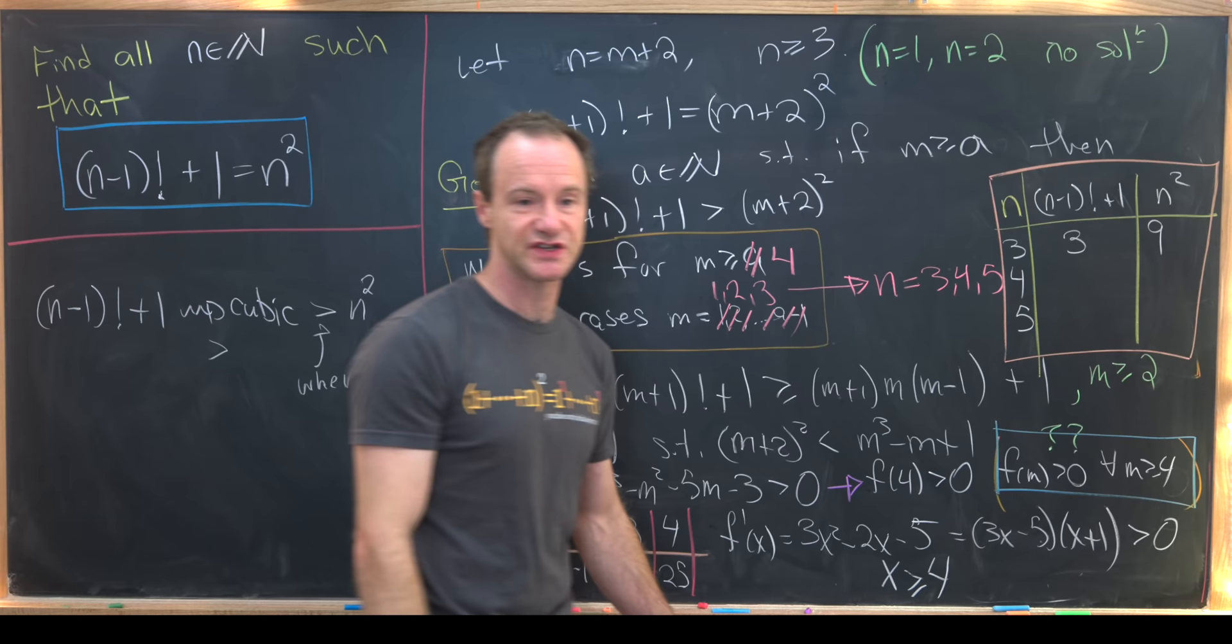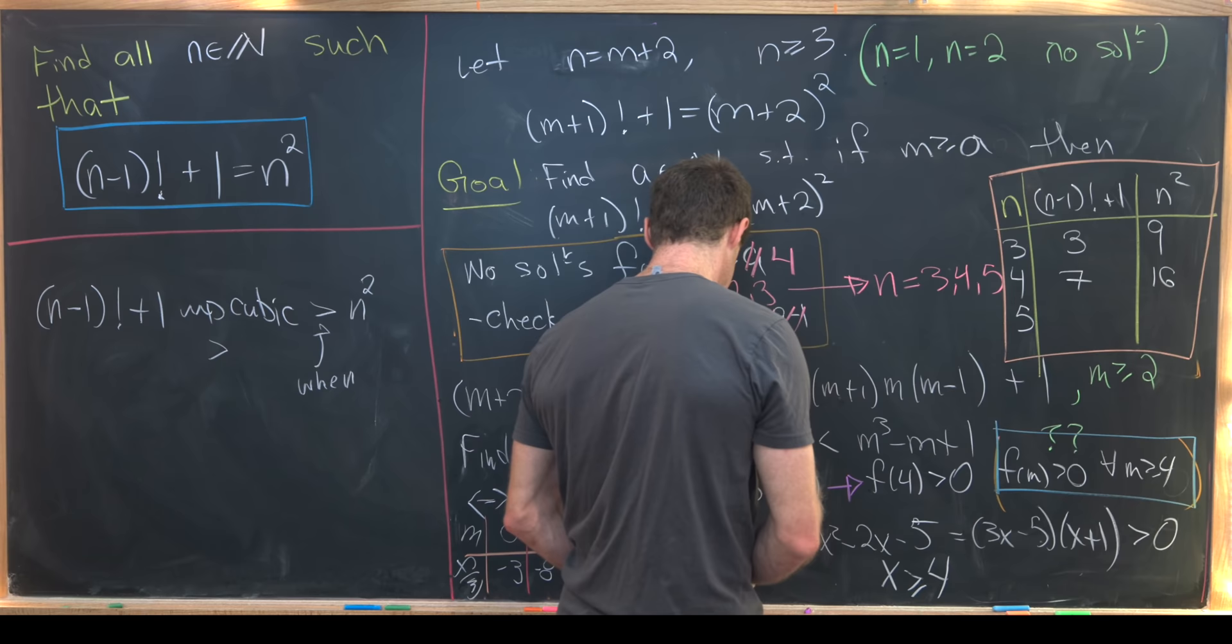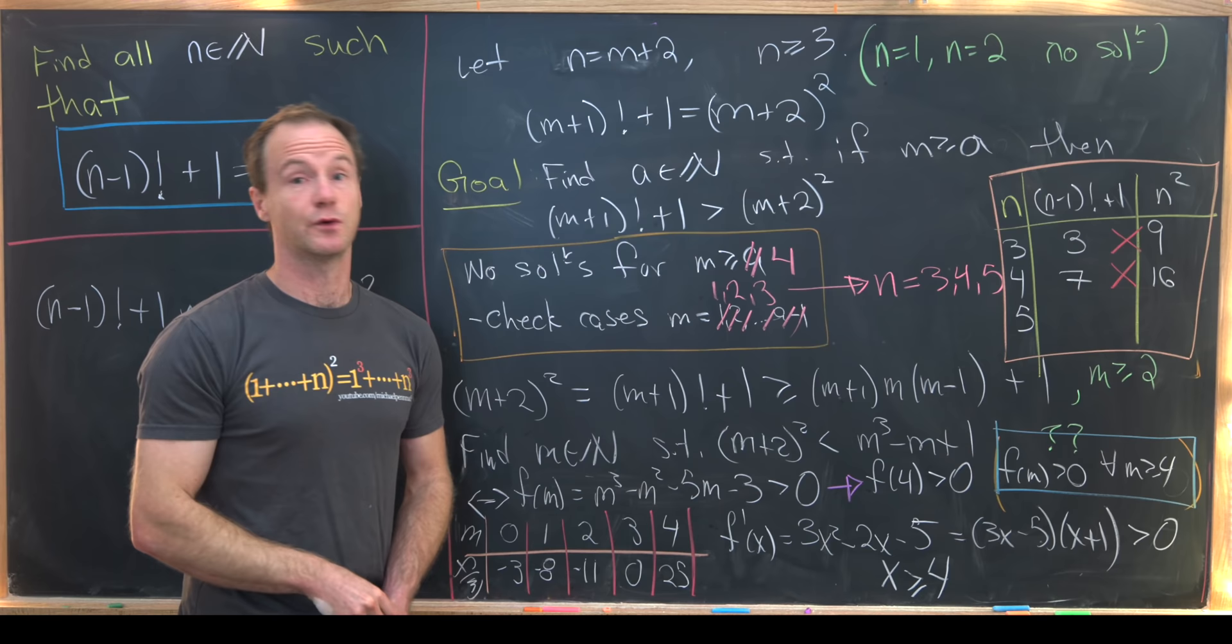Now we want to look at the case when n equals 4. So we'll get 4 minus 1 which is 3 factorial which is 6 plus 1 is 7. That is not equal to 4 squared which is 16. So just to reiterate we have no solution here and no solution here.